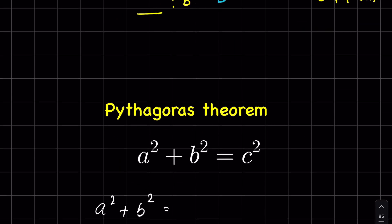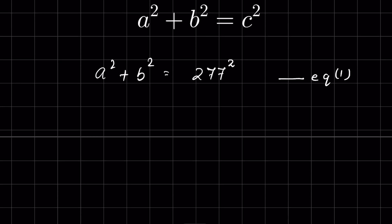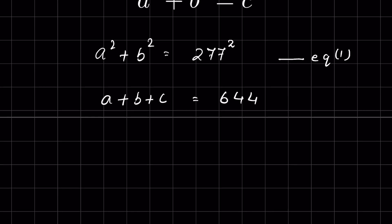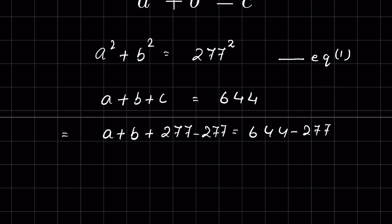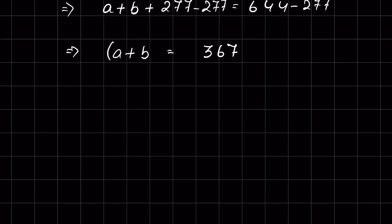The perimeter is 644 centimeters, which means a plus b plus c equals 644. Substituting c equals 277, we get a plus b plus 277 equals 644. Subtracting 277 from both sides, we get a plus b equals 367. Now if we square both sides and expand, we get a squared plus b squared plus 2ab equals 367 squared.